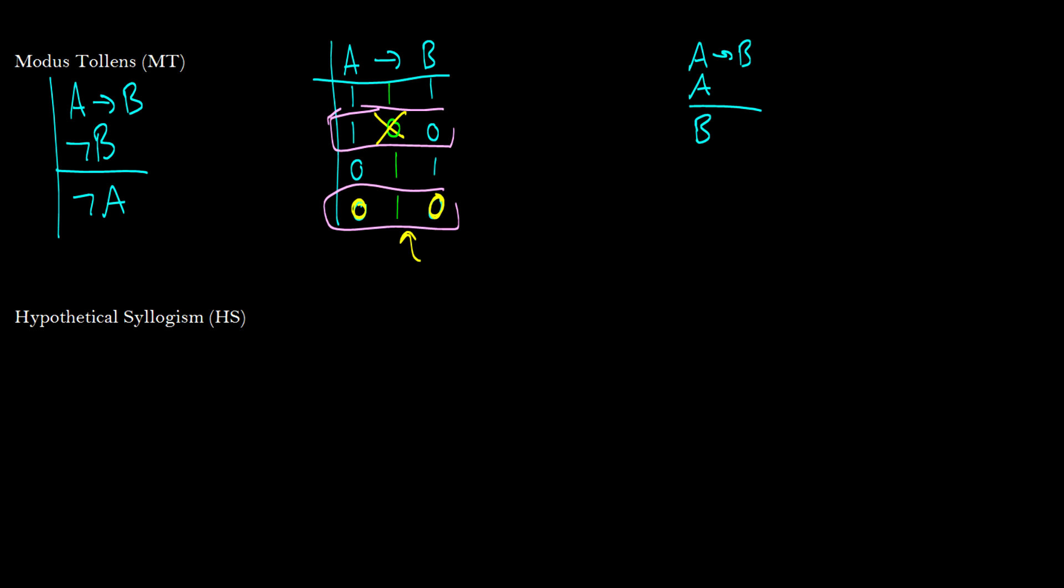So this is modus tollens, just like the other ones. If you have line i and j, then you just write i, j, MT. I won't write these out because they're kind of obvious what the lines are, and we'll get to that when we prove soundness and completeness anyway. So we'll wait till then.